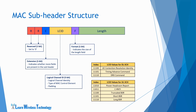F stands for Format, which defines the size of the following length field. If F is set to 0, the size of the length field is 7 bits; if F is set to 1, the size of the length field is 15 bits. L is the length field, which indicates the length of the corresponding SDU. The F2 field, which is the new field replacing one R field in Release 13, is a format field that indicates the size of the length field. If F2 is set to 0, the size of the length field is determined by the F field; if F2 is set to 1, the size of the length field is 16 bits.